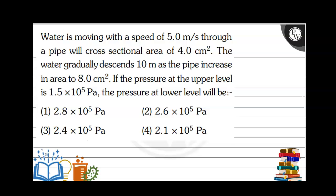Let us read the question first. Water is moving with a speed of 5 meters per second through a pipe with cross-sectional area 4.0 centimeter square. The water gradually descends 10 meters as the pipe increases in cross-sectional area to 8 centimeter square. The pressure at the upper level is 1.5 into 10 to the power 5 Pascal.